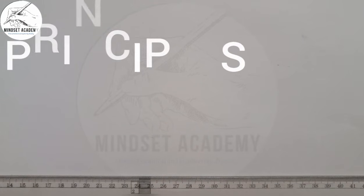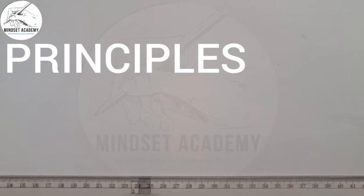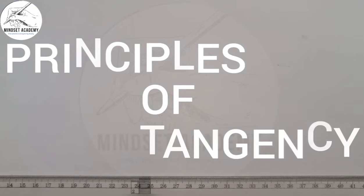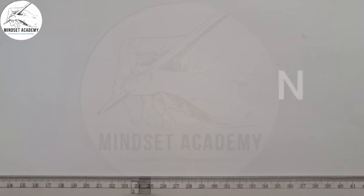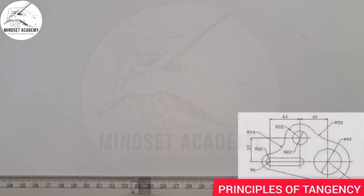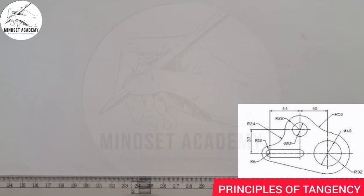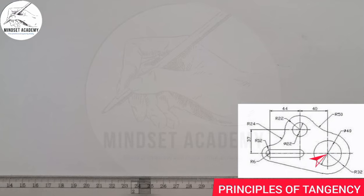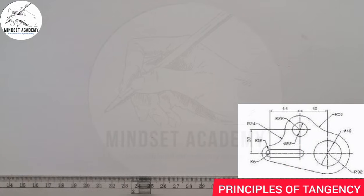Welcome to Mindset Academy, where we want to reproduce the figure displayed on the right-hand side of the screen using the principle of tangency. You should look for any center of your choice in the given figure. We have up to four centers here: this point here, this center, this center, and also this center. So we have four centers, and I'll start from the bigger one.